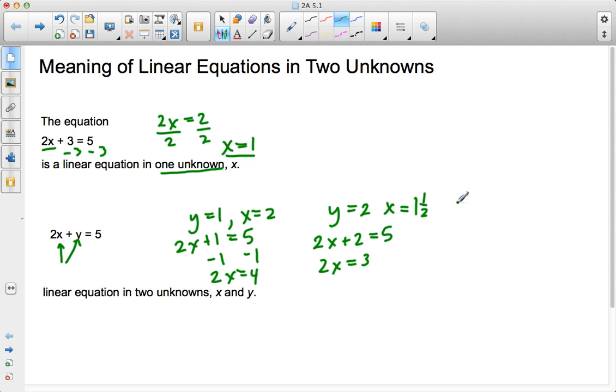Well, I could also say, what if y equals 3? Then I get 2x plus 3 equals 5, so on and so forth. So what we can see is that there are many different solutions to a linear equation in two unknowns. There's more than one, and there's a reason for that.